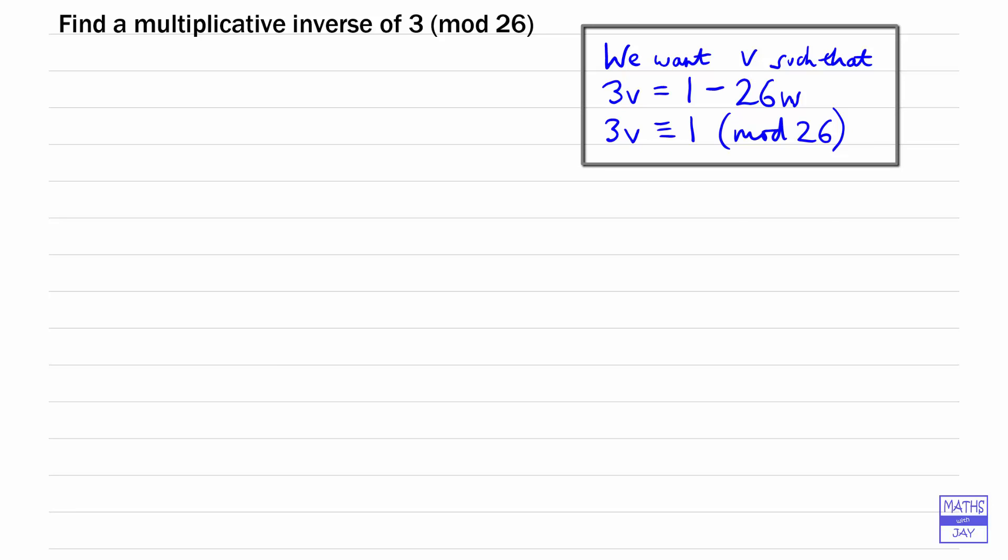We can do this using something called Bezout's identity. That tells us that 3 times an integer plus 26 times an integer is equal to the highest common factor of 3 and 26. Now, the highest common factor of 3 and 26 is 1, so that is equal to 1.